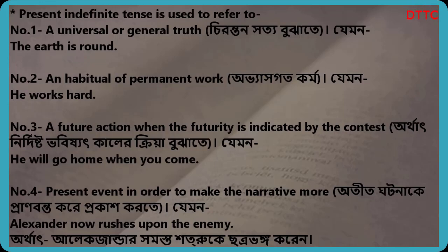Number 3 — a future action when the futurity is indicated by the context. For example: He will go home when you come. Number 4 — a present event in order to make the narrative more vivid.